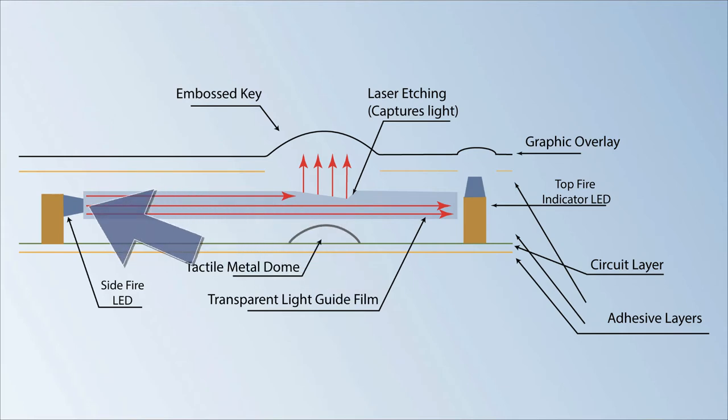Step 2. Using a side-fire LED on flexible circuit or PCB, the light is shot sideways across the plane of the light guide film layer.